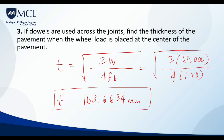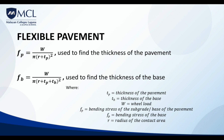For flexible pavement, two formulas are used. To find the thickness of the pavement: Fp = W / [π(R + Tp)²]. To find the thickness of the base: Fb = W / [π(R + Tp + Tb)²]. Where Tp is the pavement thickness, Tb is the base thickness, W is the wheel load, Fp is the bearing stress of the subgrade, Fb is the bending stress of the base, and R is the radius of the contact area.